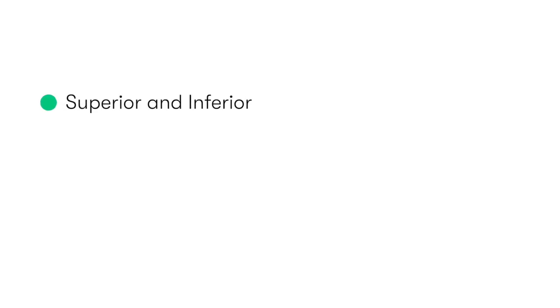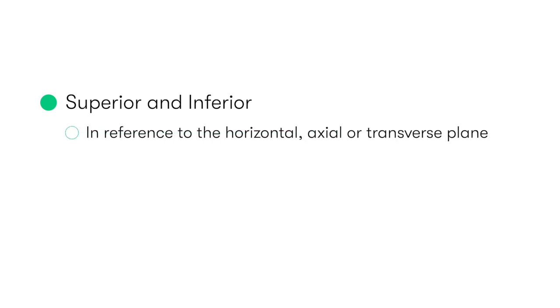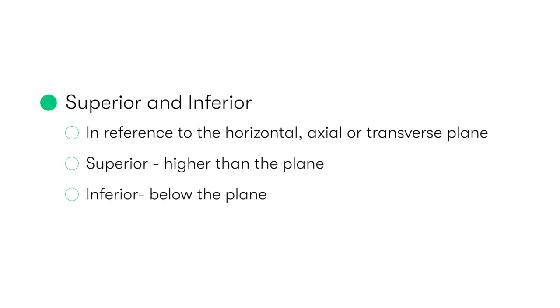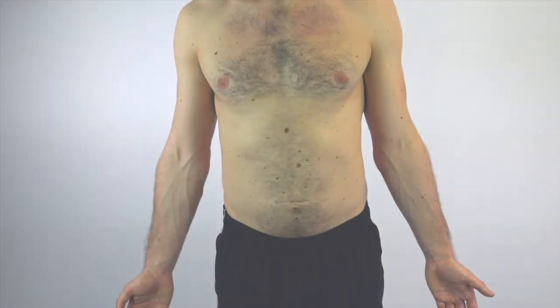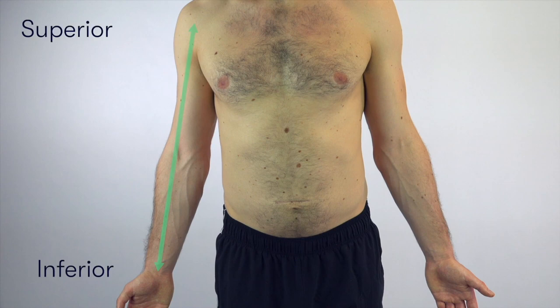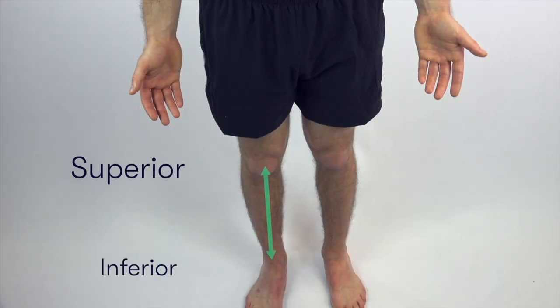Then we have the terms superior and inferior, which are in reference to the horizontal plane — also known as the axial or transverse plane — with superior being higher than the plane and inferior being below it. For example, the shoulder joint is superior compared to the wrist, and the ankle is inferior compared to the knee joint.